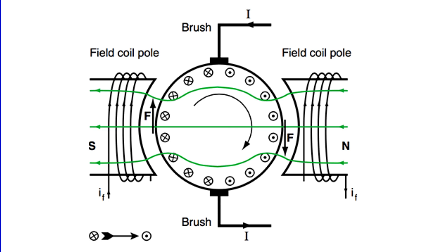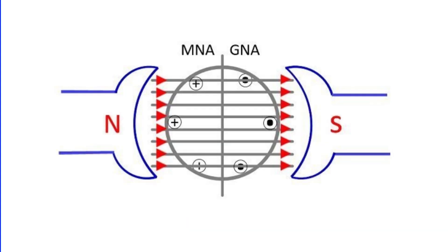In a DC machine, the carbon brushes are strategically positioned along the magnetic neutral axis. Initially, under a no-load condition, this magnetic neutral axis aligns with the geometrical neutral axis.